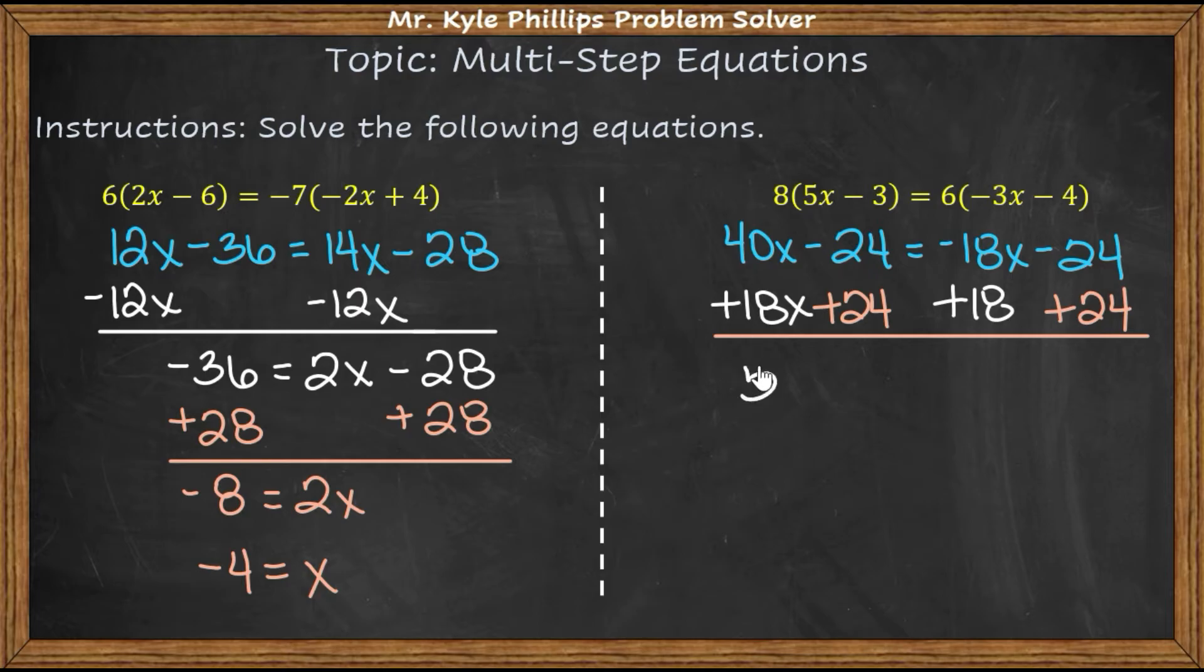So this is going to give us 58x equals zero. And then zero divided by anything is itself. Now, one thing that I've seen a lot of students do in their math journey is when they get x equals zero, for some reason they think this is no solution. That is not true.